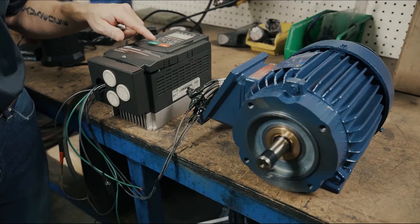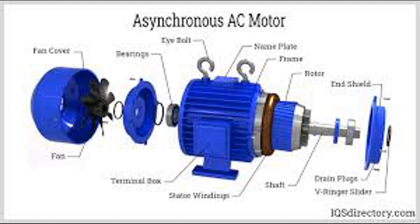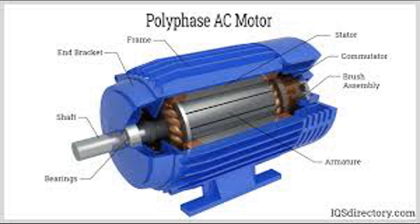What is an AC motor? An AC motor is an electric motor that is powered by an alternating current. The key feature of AC motors is that they operate on the principle of electromagnetic induction, where the alternating current in the stator — the stationary part of the motor — produces a rotating magnetic field that induces current in the rotor. This interaction between the stator's magnetic field and the rotor generates torque, which causes the rotor to spin and perform mechanical work.